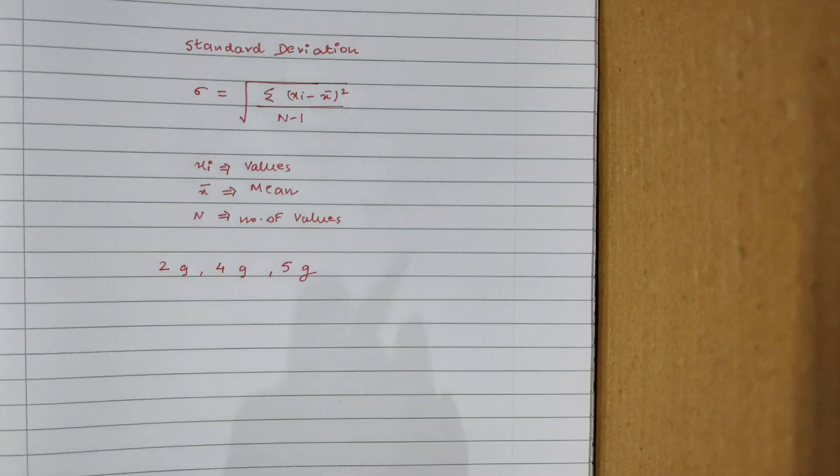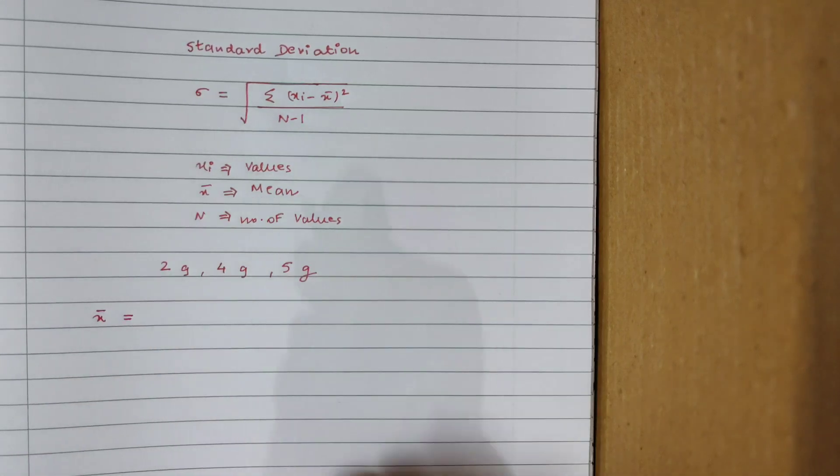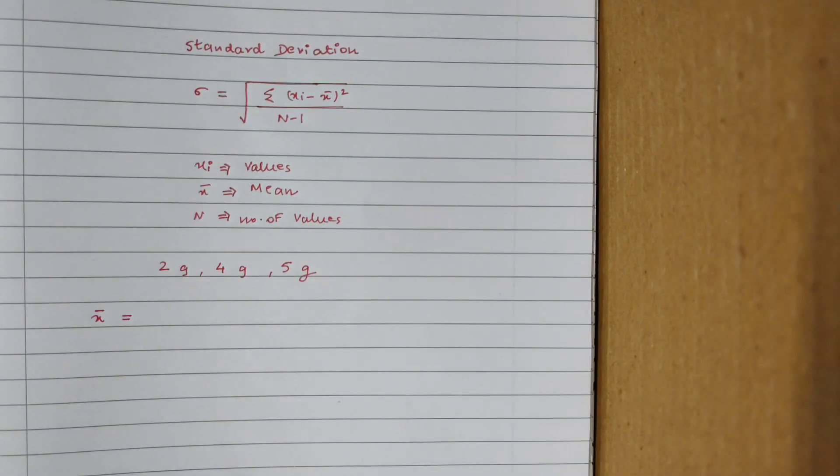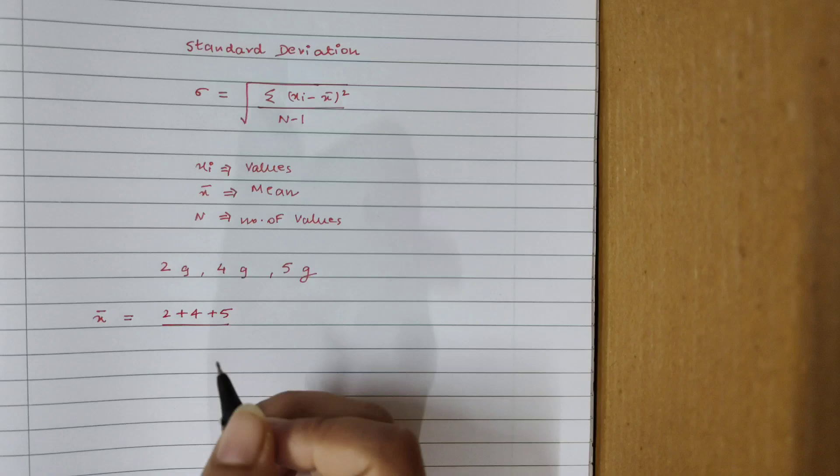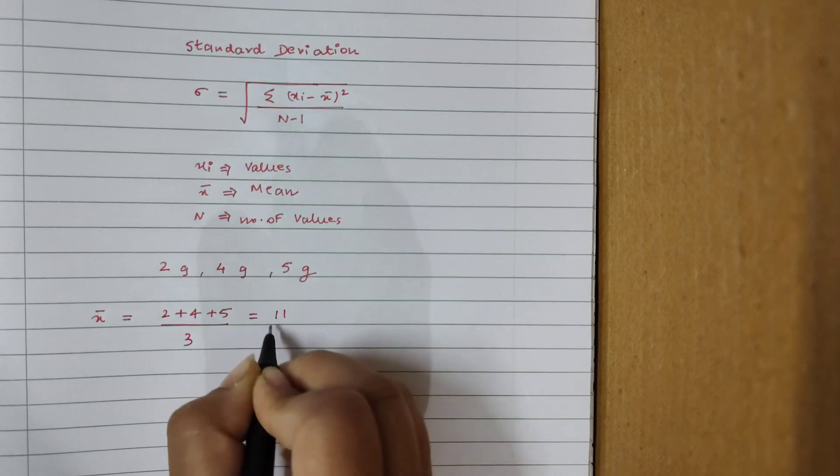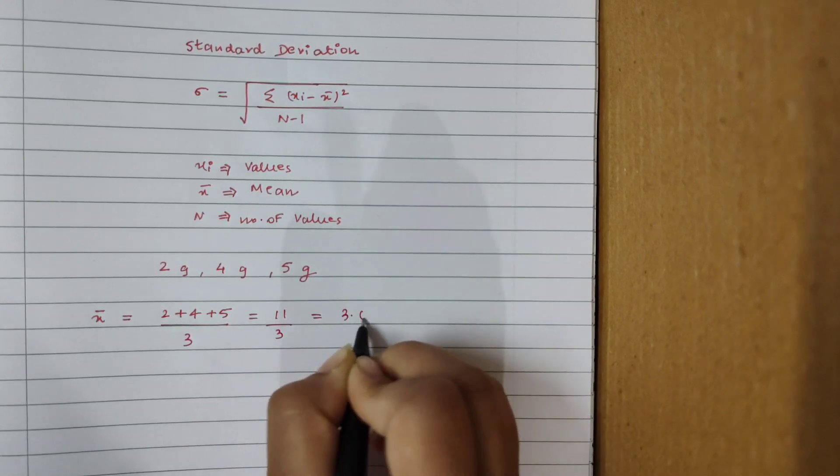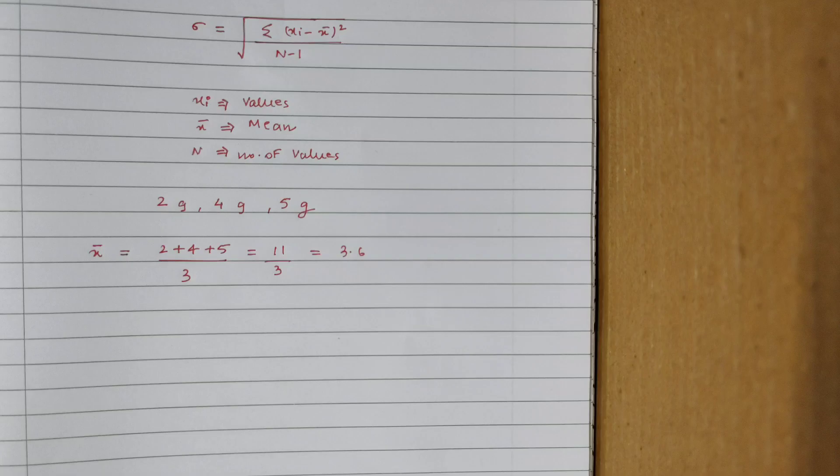Next, what I have to do is, first thing always when you're dealing with standard deviation, you have to calculate the mean, which is represented as x bar. What does mean mean? How do you calculate mean? All you have to do is add all the values or the readings that you got, divided by the total number of readings that you have. What are my readings? 2 plus 4 plus 5. And how many values, how many observations did I take? Three. So 2 plus 4 plus 5 the whole divided by 3, this will be 11 by 3, and this answer will come to 3.6. This is my x bar, which is nothing but the mean.